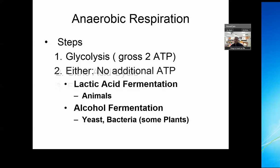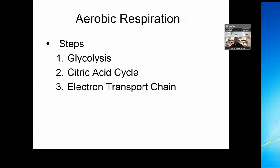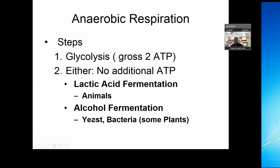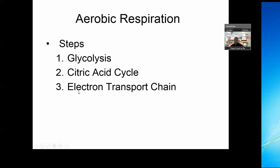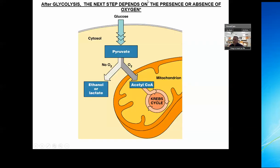Notice that step one — glycolysis — is the same whether anaerobic or aerobic. If oxygen is not available, we do something called fermentation, which is what I'll close this video with. If oxygen is available, we do aerobic respiration involving the citric acid cycle and electron transport — that'll be the next video. So glucose is broken down through glycolysis into pyruvic acid or pyruvate; if there's no oxygen, you do ethanol or lactic acid fermentation. There are two types depending on what organism you are.